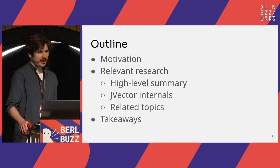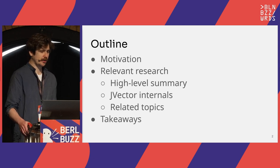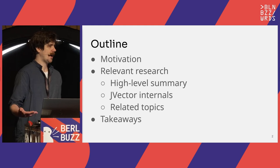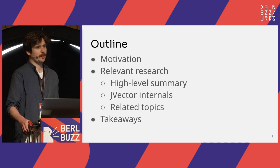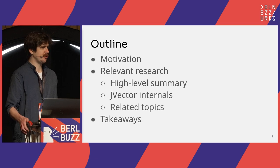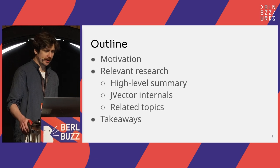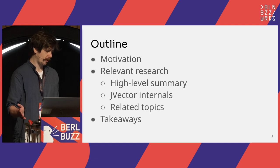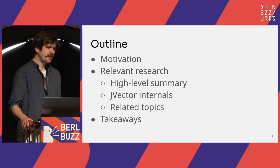A quick overview of what I plan to cover today: we'll talk about the motivation of vector search, why it's an interesting problem, some applications in industry and research, and a bit about the history of the field. That will frame our discussion of what we're building and why. We'll go over relevant research with high-level summaries, how that research influenced our choices in building JVector, and potential avenues for further development. I'll leave a few minutes for questions at the end.